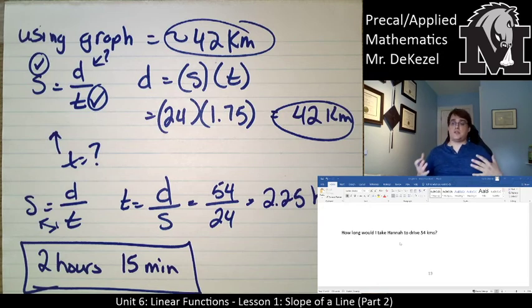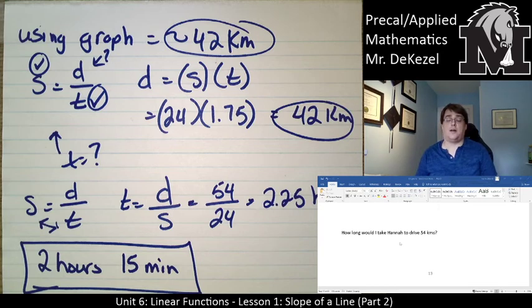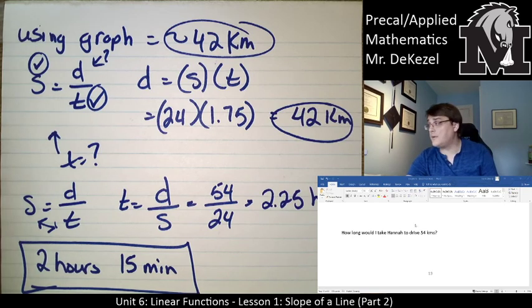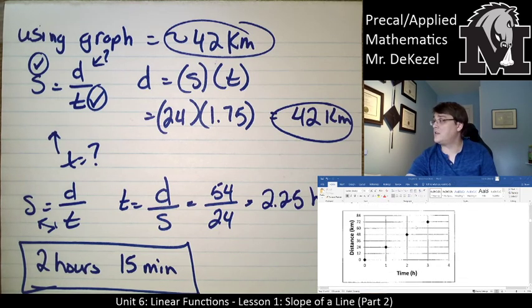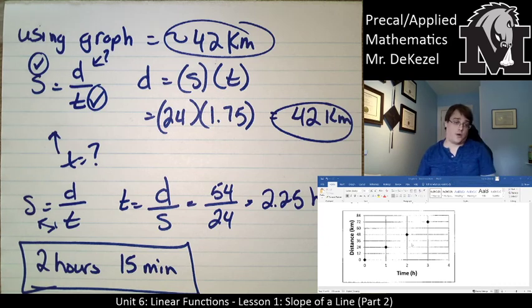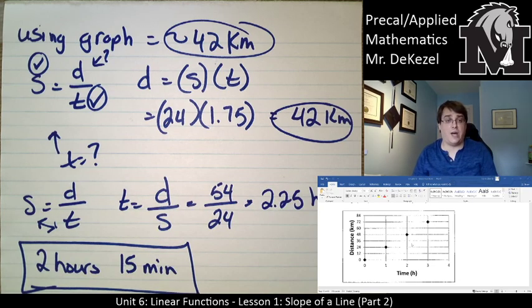Okay, so you can use the graphs to determine how far someone's gone. You can use it to determine approximately how long it's taking them to get to a distance. And you can use math, but you can also go on the graph and estimate it. If you were to go on the graph and estimate it about 54 kilometers, that'd be somewhere between 60 and 48. You were to move that over, that should be just past 2, about 2 and a quarter. So that answer does make a whole lot of sense, whether you're looking at the graph or using our math-y way to do it.